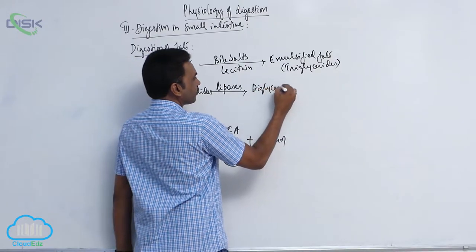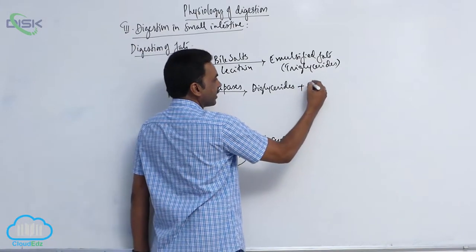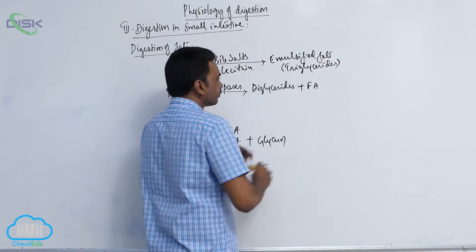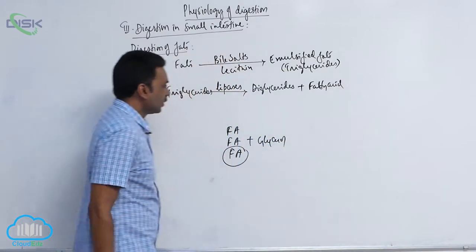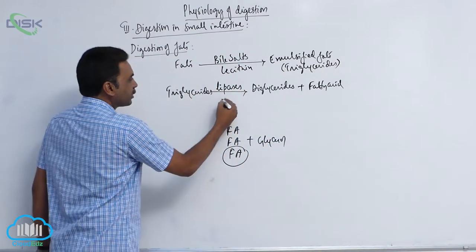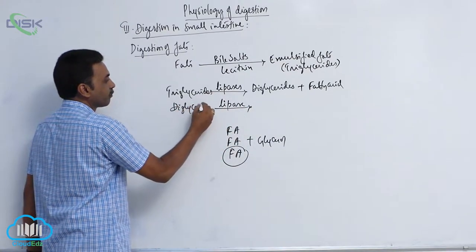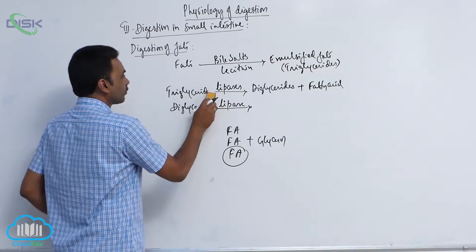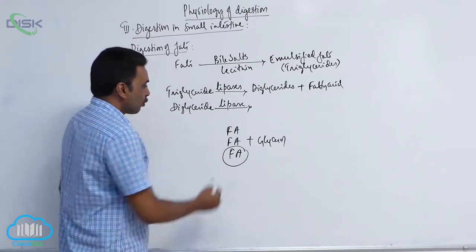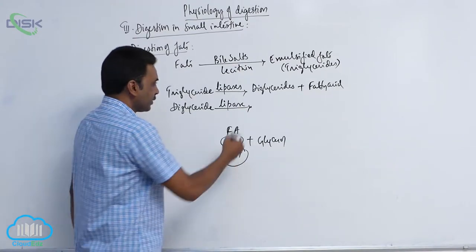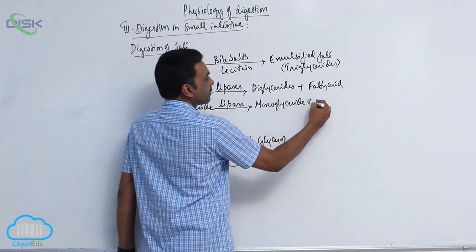Three fatty acids plus one glycerol together are called triglycerides. When one fatty acid is separated, it results in diglycerides. Lipases again act on diglycerides, separating one more fatty acid, producing monoglyceride plus a fatty acid.